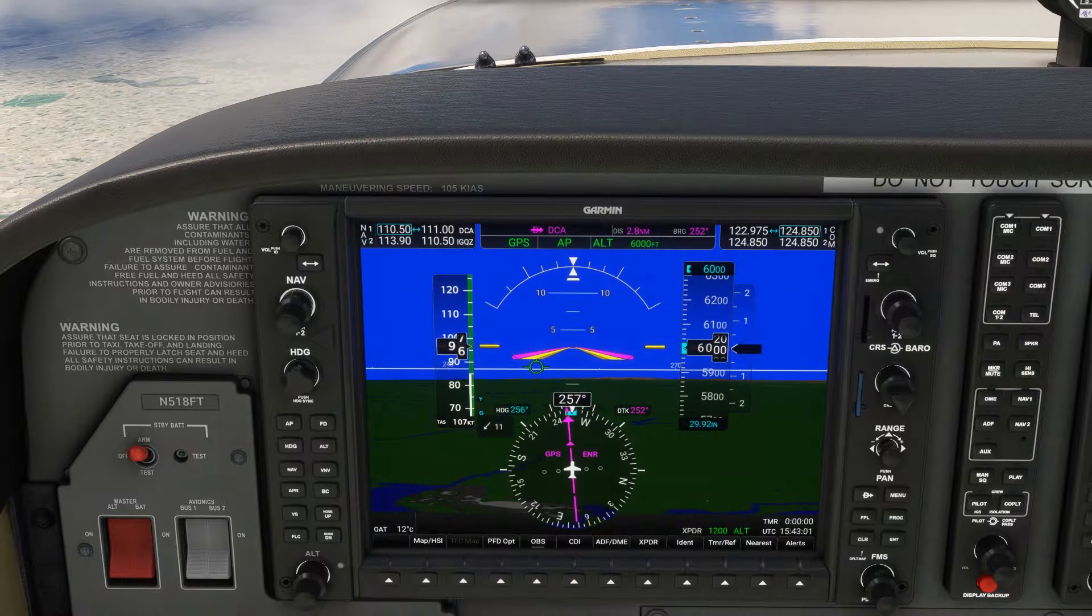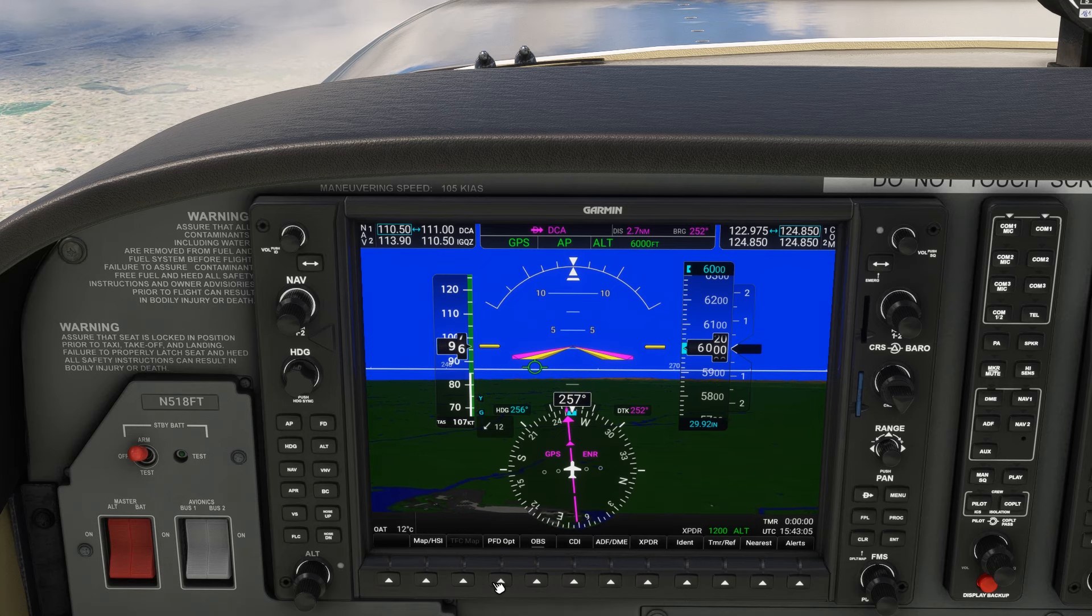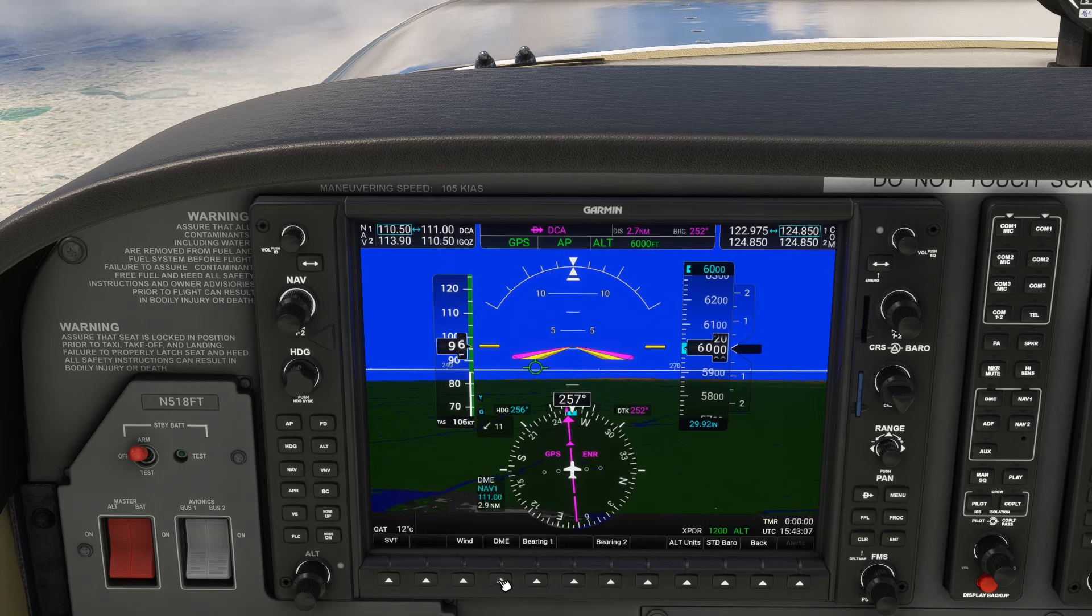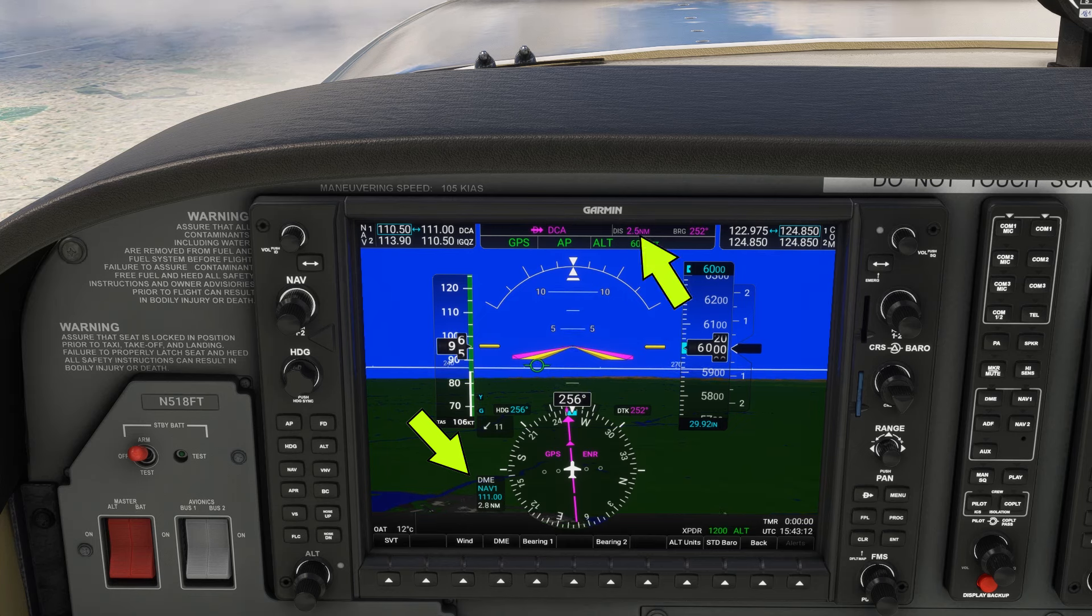Standalone DME units are getting rarer these days, but even modern units like the G1000 can display DME distance. Here we see it on the PFD, and this is actually pulling from the raw transmitter data, not the GPS.